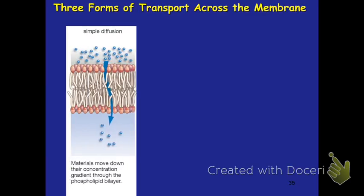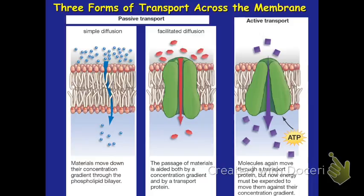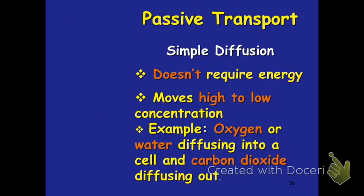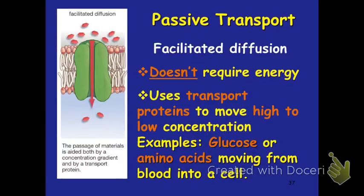We have three forms of transfer across the membrane that are passive: simple diffusion, facilitated diffusion, and then we have active transport. Simple diffusion is the first type of passive transport — it does not require energy and it moves things from a high concentration to a low concentration. Our example is oxygen or water moving into a cell, and carbon dioxide diffusing out. Facilitated diffusion still doesn't require energy, but instead of moving directly through the phospholipid bilayer, we are actually going to use transport proteins to help move the molecules through.